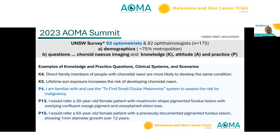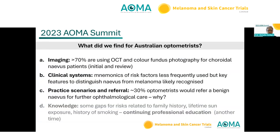A small survey was conducted with students — optometrists and ophthalmologists across Australia. Focusing only on optometrists, the survey covered demographics, imaging, knowledge of risk of people developing nevi, what scales or grading systems they use, and whether they would refer certain cases. Optometrists use a lot of imaging, they don't use mnemonic risk factor systems all that frequently, and optometrists are referring around 30% of patients. There are knowledge gaps, though time does not allow covering them today.